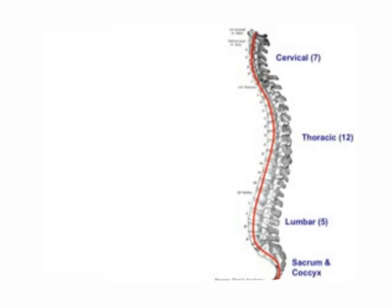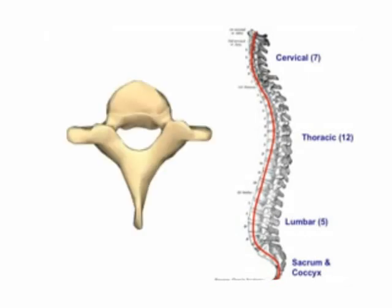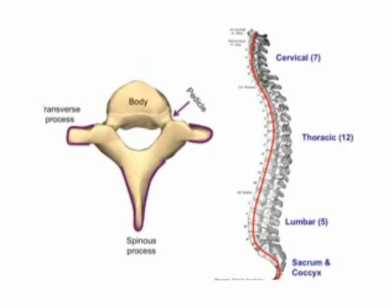A superior view of a typical vertebra reveals the following structure: anteriorly, we have the body which is the weight-bearing section of the vertebra; posteriorly, we have the spinous process; on the sides, we have the transverse processes, both of which serve as attachments for muscles. Connecting the body to the transverse process we have the pedicle, and from the transverse process to the spinous process we get the lamina. Together, the lamina and the pedicle form what we call the vertebral arch. The vertebral foramen is the hole through which the spinal cord passes. We also have the superior articular facets on either side, and the inferior articular facets which cannot be seen in this picture.